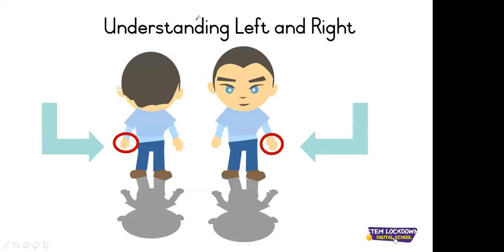Understanding left and right — for all of those guys who are new — remember that when something is facing you, his left will change from one side to the other side if he turns around. So you can see the boy's left hand, but when he turns around, his left hand is on the other side. So when we go left and when we go right, it depends on where your character is.